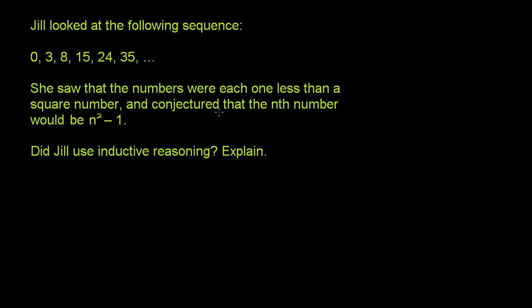And conjectured that the nth number would be n² minus 1. Now conjecture, that sounds like a very fancy word. When someone makes a conjecture, or they conjectured, that just means they're making a statement that seems, or they're making a proposition that seems likely to be true, seems like a very reasonable thing to say, but it's not definitely true.